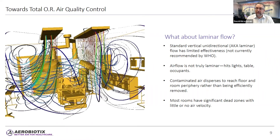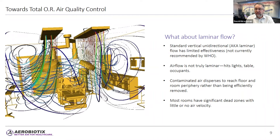What about laminar flow? Standard vertical unidirectional — also known as laminar flow — has been shown to have limited effectiveness and is not currently recommended by the World Health Organization. What we call laminar airflow is often not truly laminar; the air doesn't flow in a straight line. It hits lights, the table, and room occupants, causing contaminated air to disperse to the room periphery rather than being efficiently removed.